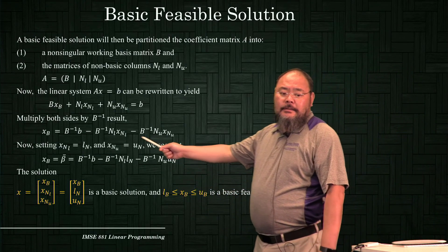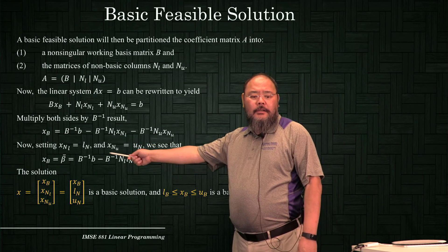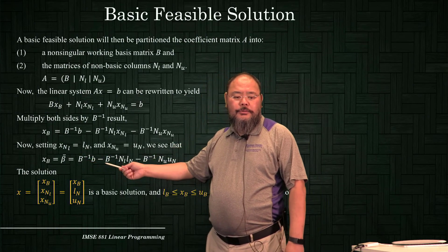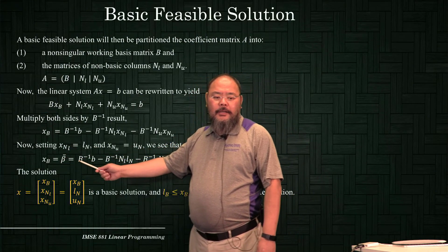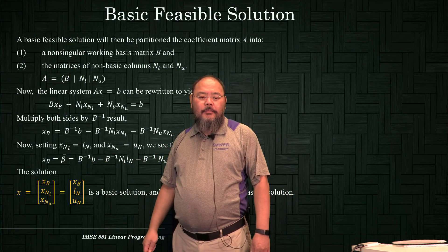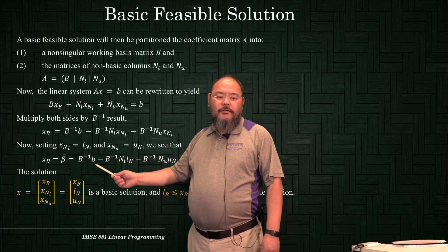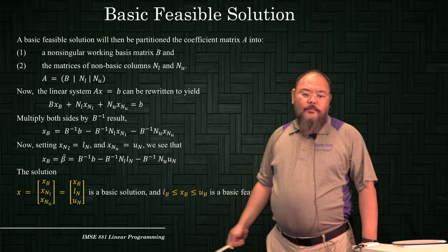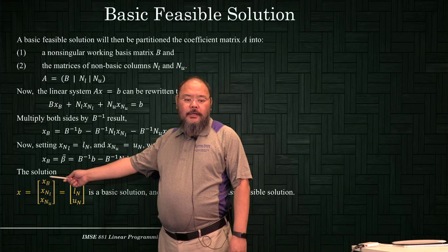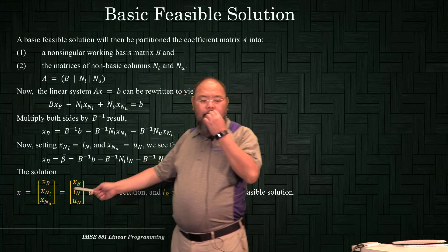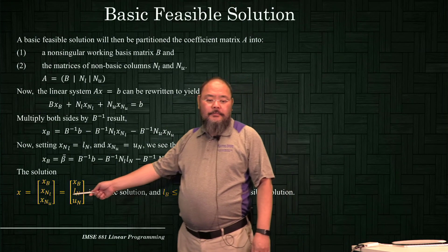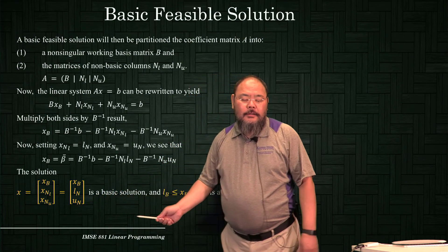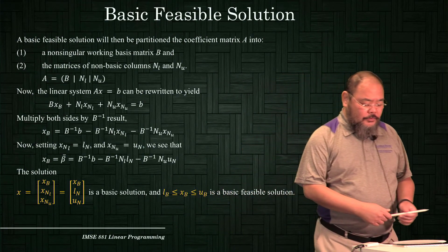By setting xNL equal to their lower bounds lN and xNU equal to their upper bounds uN, we can calculate the current basic solution. We'll use the symbol beta-bar to represent this: beta-bar = B⁻¹b − B⁻¹·NL·lN − B⁻¹·NU·uN. The current solution x = (xB, xNL, xNU) equals (beta-bar, lN, uN), with basic variables between their lower and upper bounds satisfying feasibility.